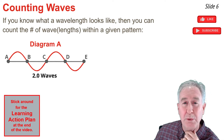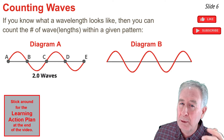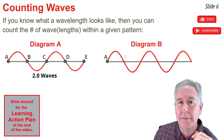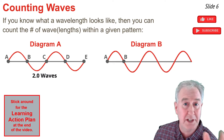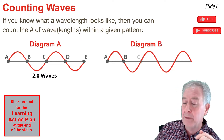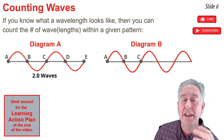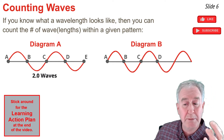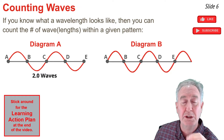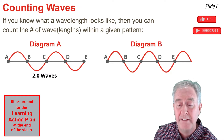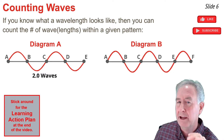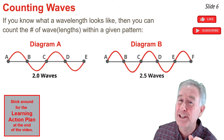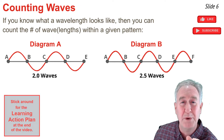Repeating in diagram B, starting at point A: A to B is a half wave, B to C is another half, C to D is the third half, D to E is the fourth, and E to F is the fifth half of a wave. Five times one-half is two and a half wavelengths.